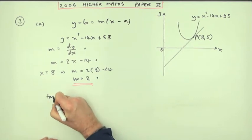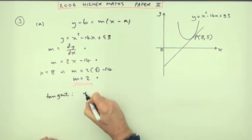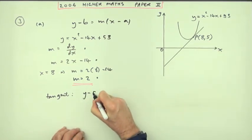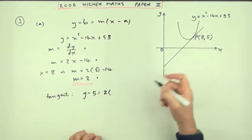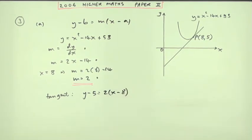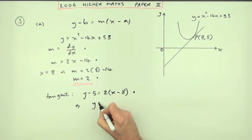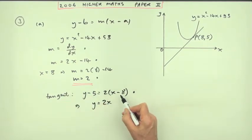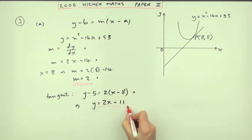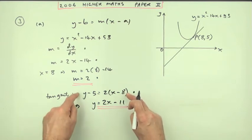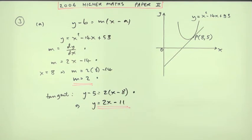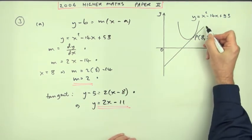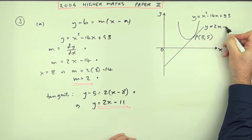The tangent is: y minus the y-coordinate equals the gradient 2 times x minus the x-coordinate. That's sufficient for the fourth mark. Tidying it up: y equals 2x, then minus 16 plus 5 gives minus 11. So the tangent is y equals 2x minus 11. I'll add this line to the diagram.